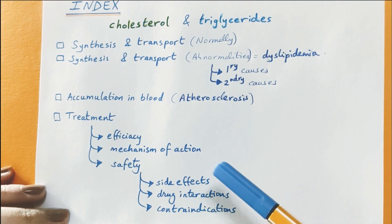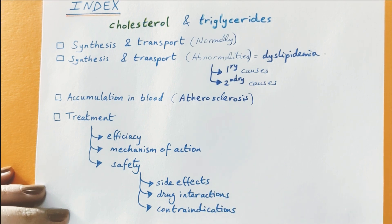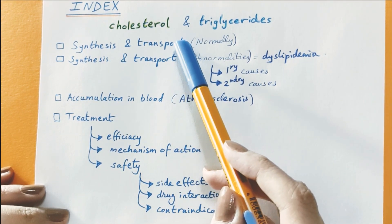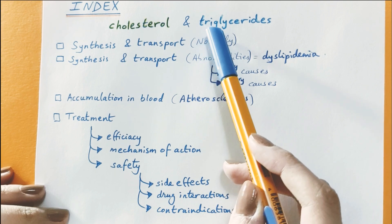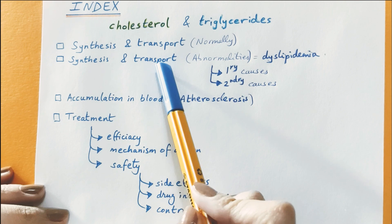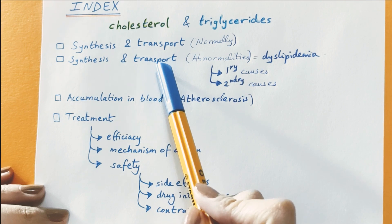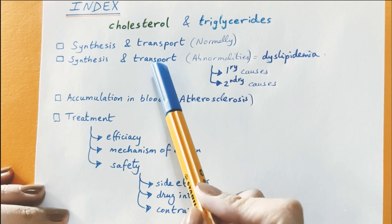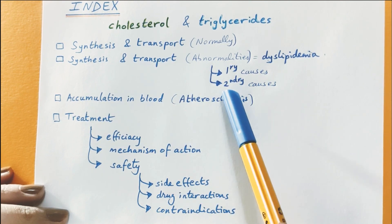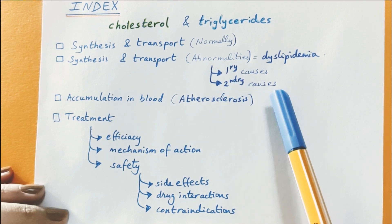We can directly talk about the disease dyslipidemia, but to achieve maximal understanding and maximal information retention about the disease and the drug treatment with minimal effort, we will first discuss how the synthesis and transport of cholesterol and triglycerides occur normally. This will automatically clarify how any abnormalities in these two processes cause dyslipidemia, whether directly — which are the primary causes — or indirectly — which are the secondary causes of dyslipidemia.